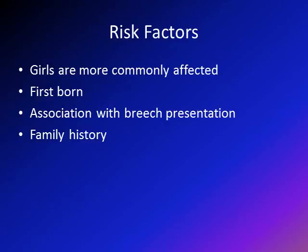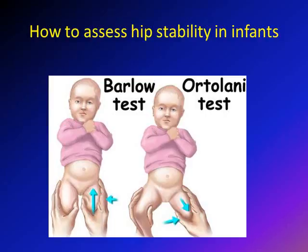What are the risk factors? Girls are more commonly affected than boys. It usually occurs in firstborn children because the maternal musculature is still tight. It is associated with breech presentation and a positive family history. So the highest risk is in a firstborn female with breech presentation and positive family history — this is extremely important.